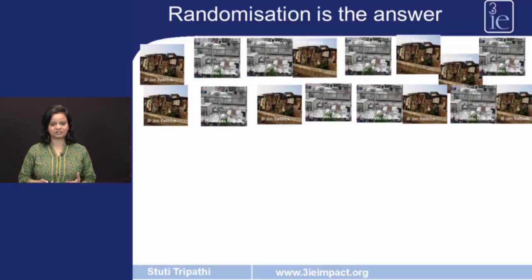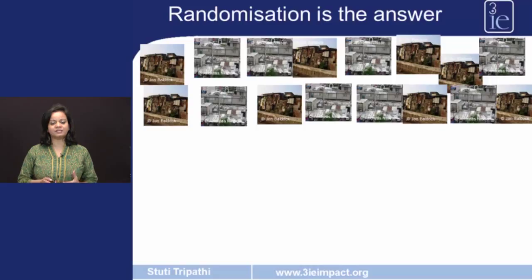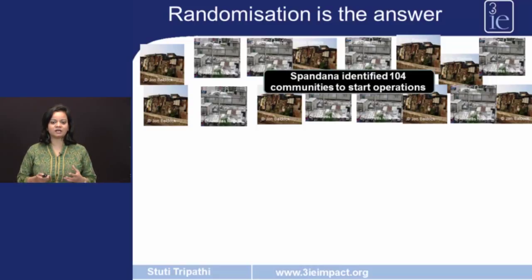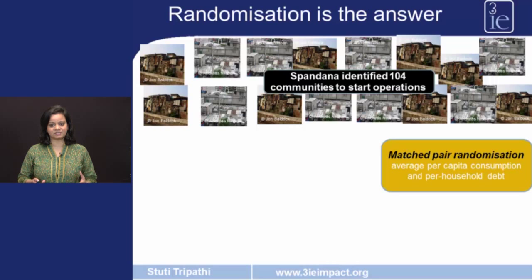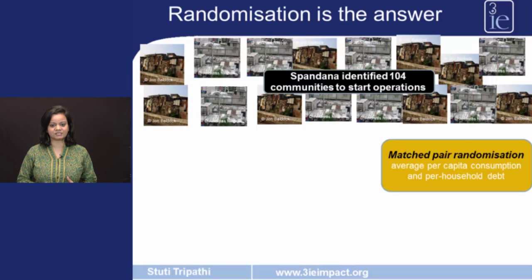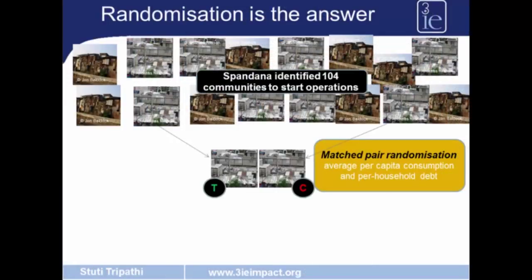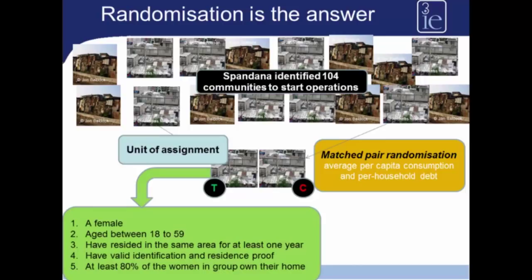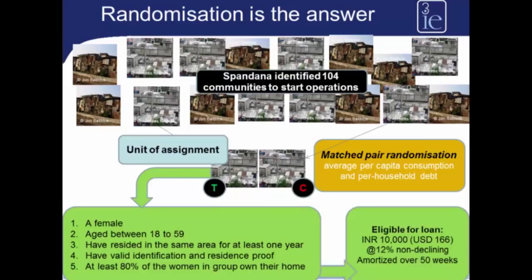So how was the randomization done for this study? Spandana was asked to identify communities which in its assessment were fertile ground for launching microfinance operations. Spandana identified 104 such communities. The researchers then did a matched pair randomization, where communities with similar levels of average per capita consumption and per household debt were grouped into pairs, and one of each pair was randomly assigned to treatment or control. For communities assigned to treatment, all women aged 18 to 59 who had resided in the area for at least one year, had ballot identification and residence proof, and were willing to form a group became eligible for a loan of rupees 10,000 at 12% non-declining interest, amortized over 50 weeks.